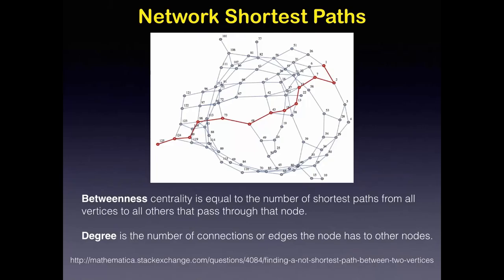To clarify what shortest paths are: the shortest path is the quickest way to get from one node to another, taking the fewest intermediate nodes. Several nodes appear in many shortest paths and are said to have high betweenness or betweenness centrality. Degree is the number of connections each node has — a central node might have three connections while a peripheral node has only one.